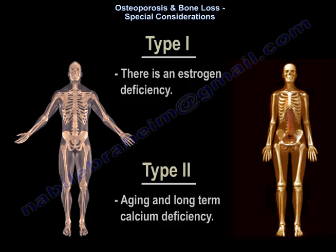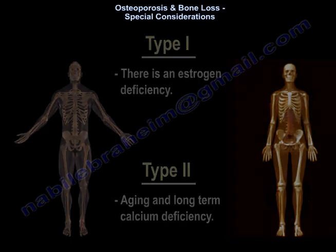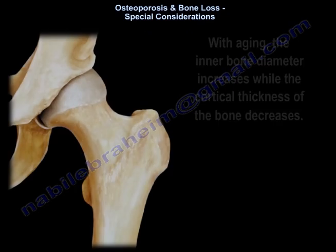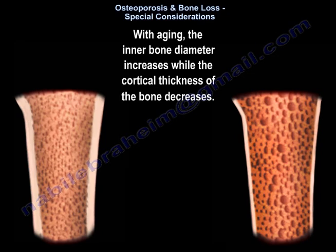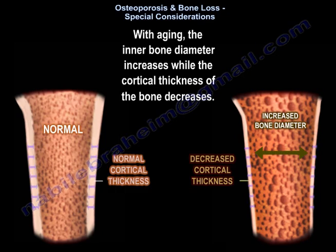In Type 1 there is estrogen deficiency, while in Type 2 there is aging and long-term calcium deficiency. With aging, the inner bone diameter increases while the cortical thickness of the bone decreases.